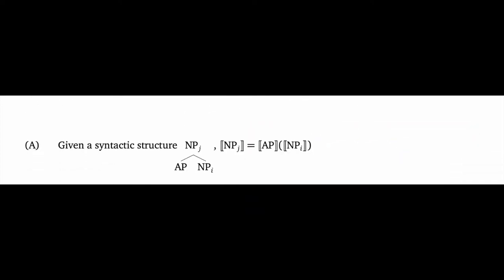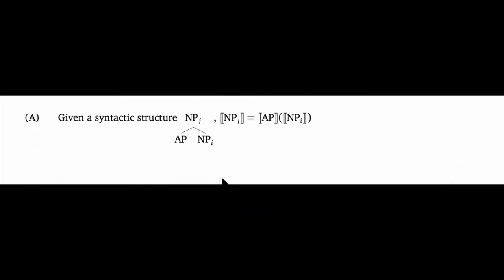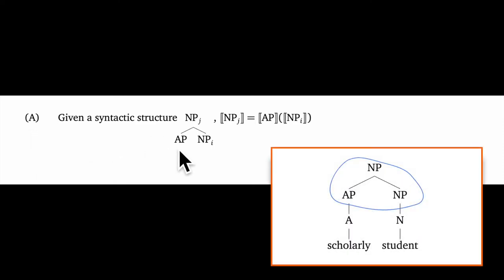Our next rule is A for adjective. It explains how to handle adjectival modifiers of NPs. And this rule is just doing function application in the only way it can be done given the child nodes involved. We know from the lexicon that adjectives are functions from sets to sets. And this NP is definitely going to denote a set. So we apply the AP meaning to the NP meaning.